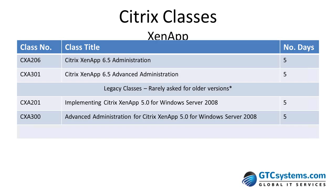The CXA 201 is part of the legacy piece — Citrix ZenApp 5.0 for Windows Server 2K8. ZenApp 5.0 is still out there because it's compatible with 2003 and also compatible with 16-bit apps. The ZenApp 6.5 course is 64-bit only, running on 2K8R2 — the only operating system you can install it on. That means 16-bit apps stay on 5.0 if you can't port them to 32-bit. Some companies run multiple farms. The CXA 300 mirrors the 301 but for the 5.0 version. Legacy 4.5 and 4.0 courses are available — call GTC.